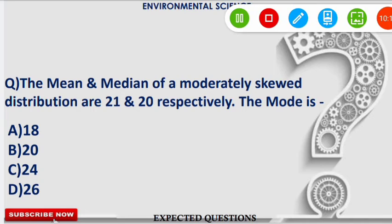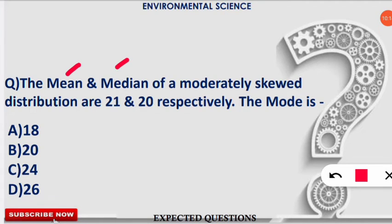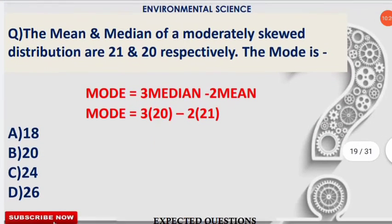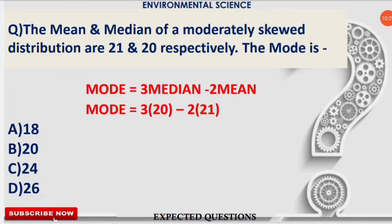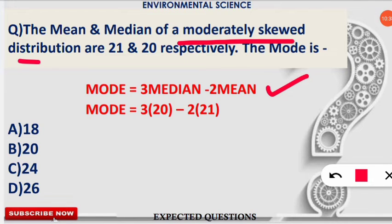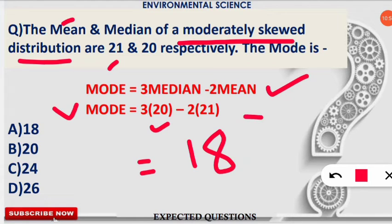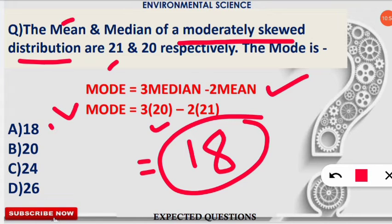The next question: the mean and median of a moderately skewed distribution are 21 and 20 respectively. Find the mode. The formula is: Mode = 3 × Median − 2 × Mean. So Mode = 3 × 20 − 2 × 21 = 60 − 42 = 18. The mode is 18, which is option A — the correct answer.